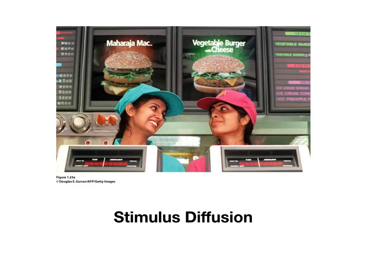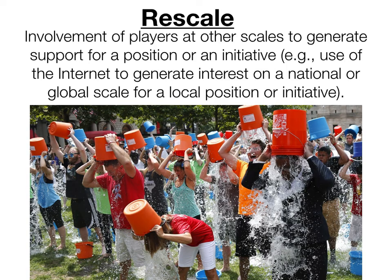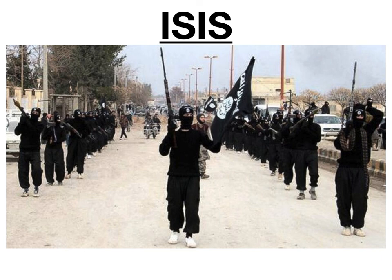An example of stimulus diffusion is the Maharaja Mac and vegetable burger with cheese — McDonald's in India. They've taken the original McDonald's concept and adapted it to fit the local context, because people there are largely vegetarian and Hindus don't eat beef. The final term is rescale — the involvement of players at other scales to generate support for a position or initiative, such as using the internet to build national or global interest for a local cause. The ALS ice bucket challenge went from a local initiative to a global viral sensation. Another example is ISIS, which started in northern Iraq and eastern Syria and then strategically used the internet to become a global phenomenon.